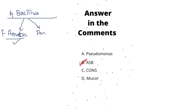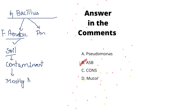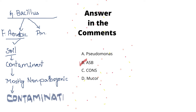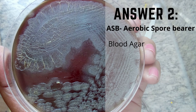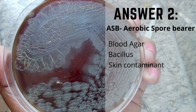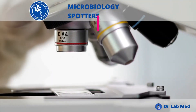Bacillus is divided into facultative aerobic and anaerobic; ASB comes under facultative aerobic Bacillus and is commonly found in soil as an environmental contaminant and in normal skin flora. Most strains of Bacillus are non-pathogenic for humans except Bacillus cereus and Bacillus anthracis. Since no history of fever, vomiting, or skin manifestation was given, the final answer is aerobic spore bearer — a skin contaminant, mostly non-pathogenic.